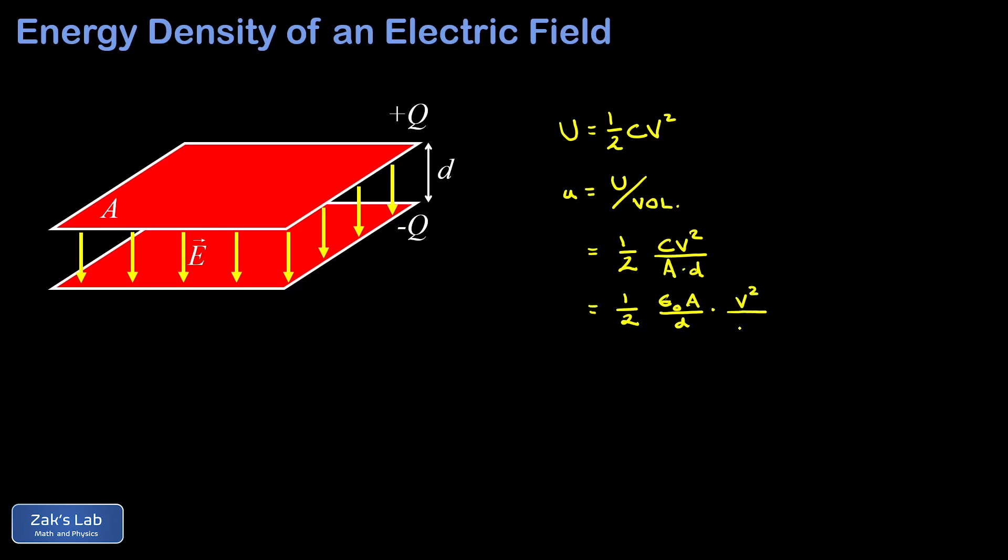The area of the plates is going to cancel out and I end up with one half epsilon zero times V over d all squared.